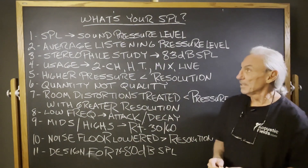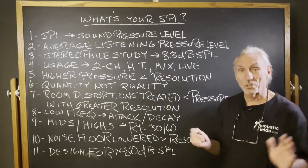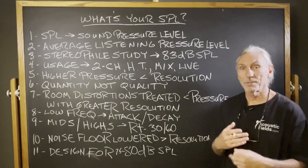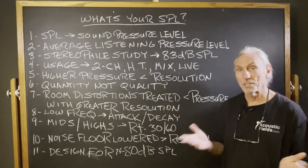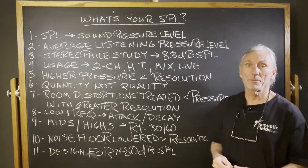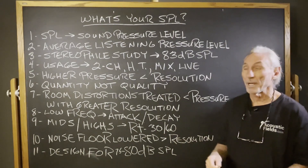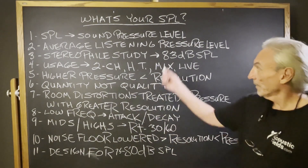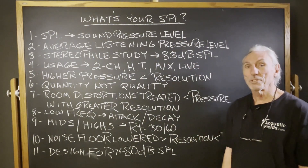Let's define SPL. SPL is sound pressure level. Pressure in rooms can be produced by all kinds of frequencies — lows, mids, and highs. Obviously, the low frequencies produce greater pressure because they're bigger waves. So we have a pressure level in your room that you listen to.